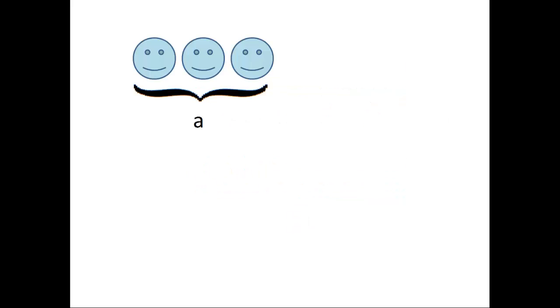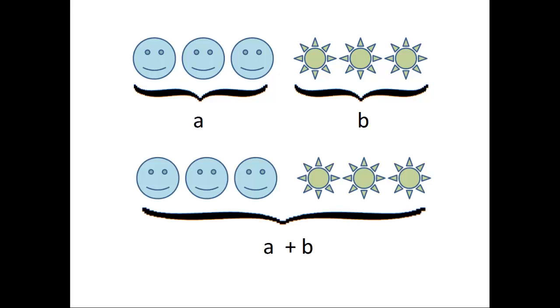In general, if we have A objects in one group and B objects in another group, that means there are A plus B ways of choosing an object from either of the two groups. That is the idea behind the rule of sum.